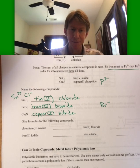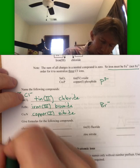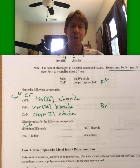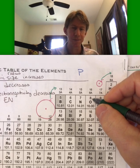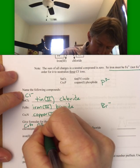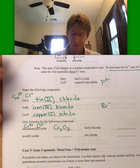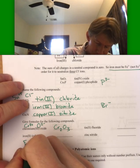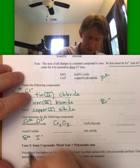Now let's do it the opposite way. If you have the name, you know the charge on the ion. Chromium(III) oxide — this is going to be Cr three plus, and oxide is two minus. Crisscross your charges to become the subscripts — Cr2O3. Iron(II) iodide — we have iron two plus and iodide minus. Crisscross to get FeI2.